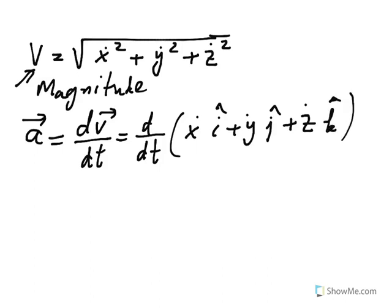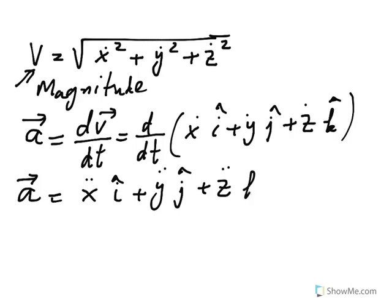So, again, as you do product rule, since the derivative of the unit vectors are zero, what will happen is that now we get the derivative of x dot becomes the second derivative of x, which is x double dot times i, plus y double dot times j, plus z double dot times k.